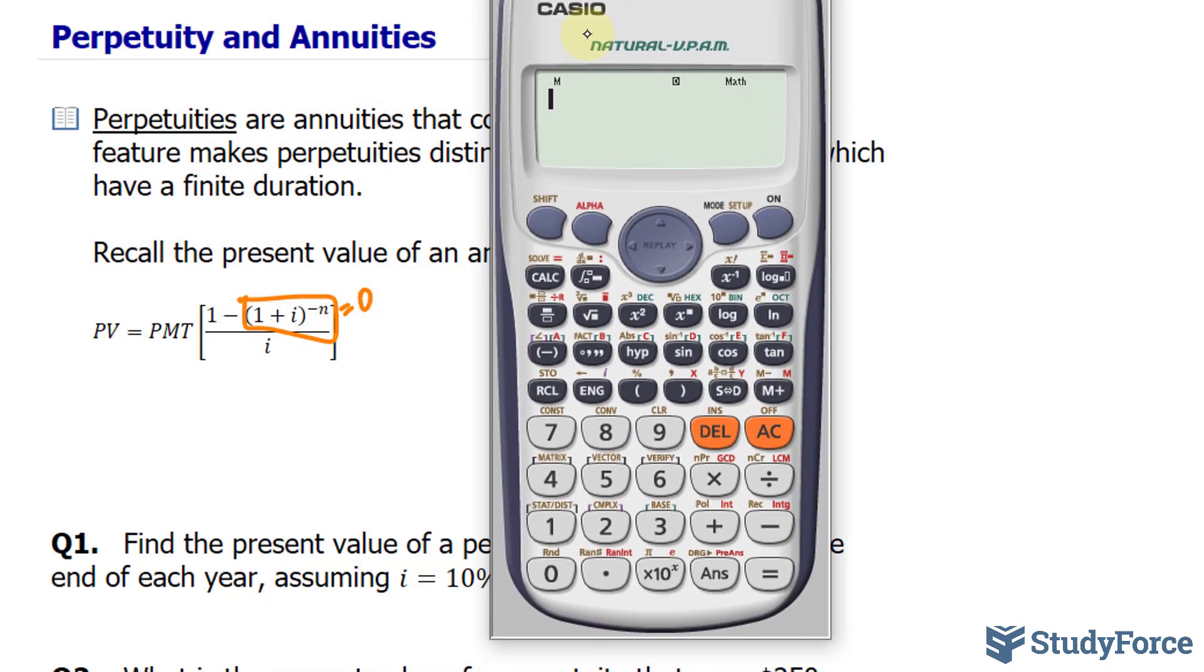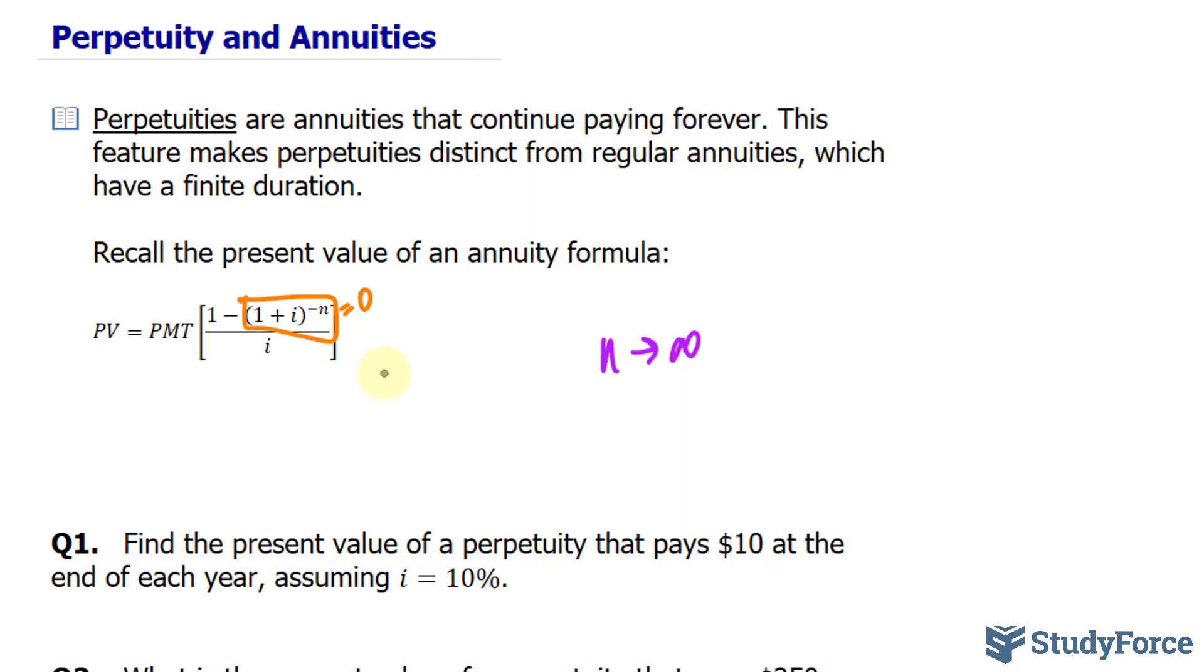And just to show you what I mean, if I were to write down in parentheses 1 plus, and think of any interest that you want, let's say 10%, so .10, close parentheses, and we raise that to the power of negative, think of an extremely large number to represent infinity, we end up with zero.